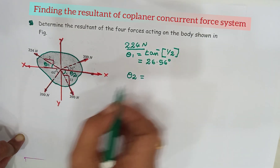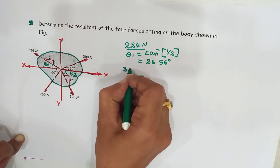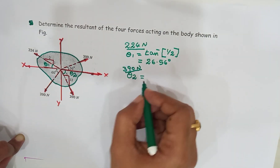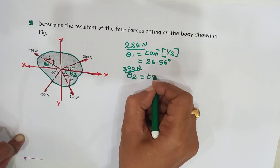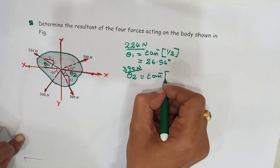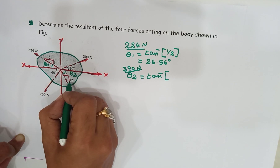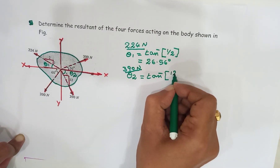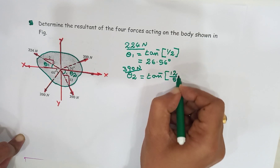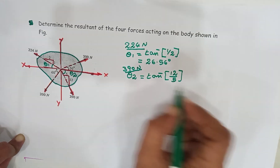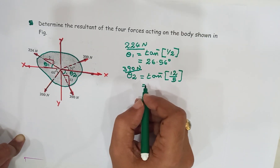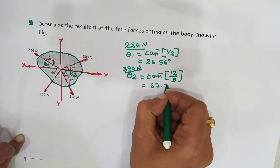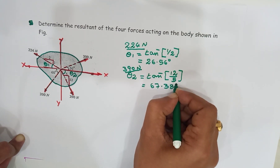Theta for the 390 Newton force is tan inverse of 12 by 5 — that is, opposite side divided by adjacent side — which is equal to 67.38 degrees.